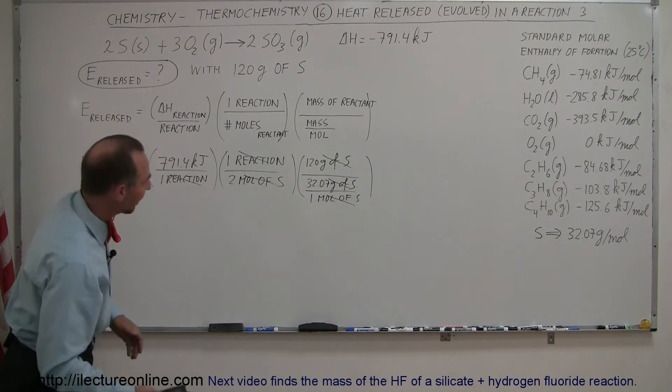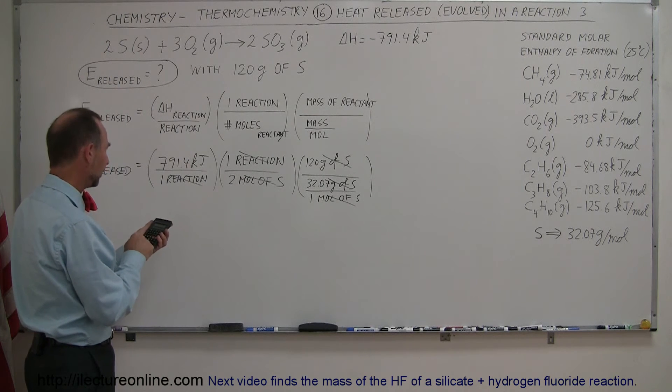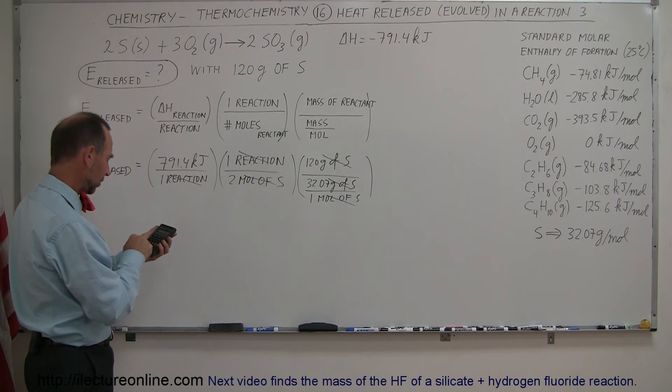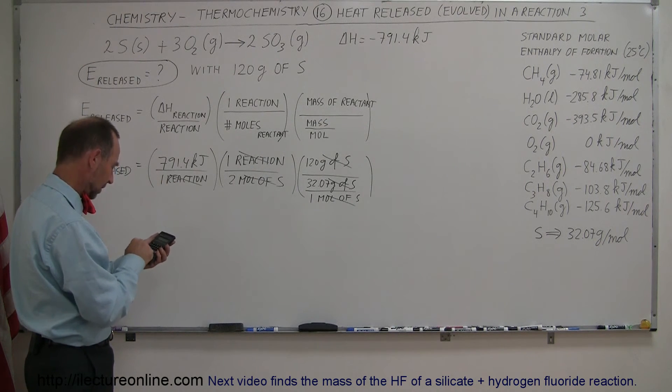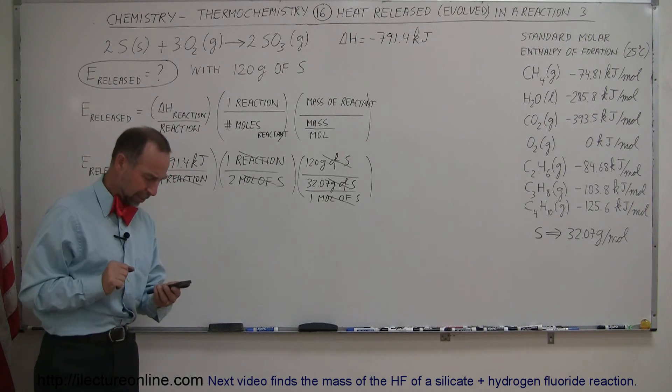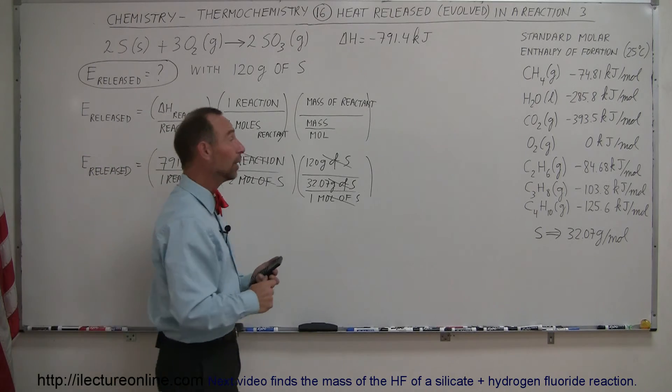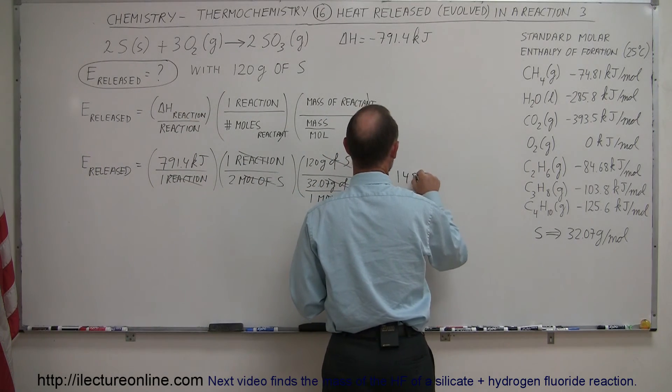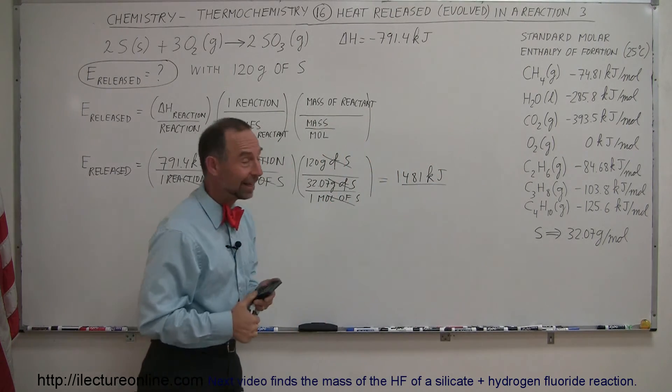So let's go ahead and find out how much energy is released in this reaction. 791.4 divided by 2, multiply times 120, and divide by 32.07. And that leaves us with 1,481. So this is equal to 1,481 kilojoules of energy released in that reaction.